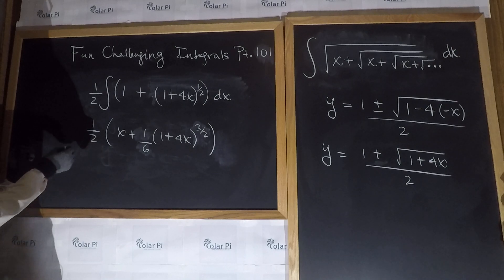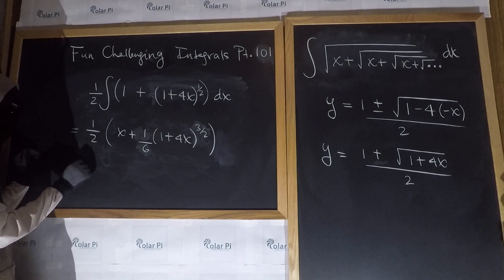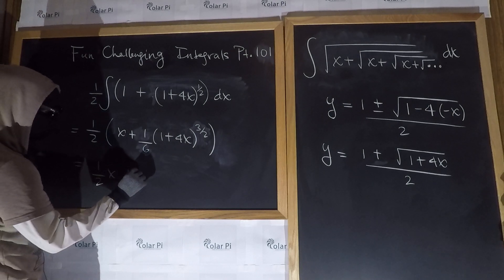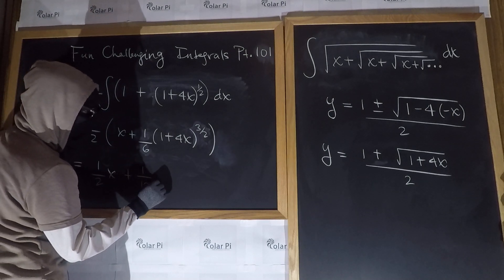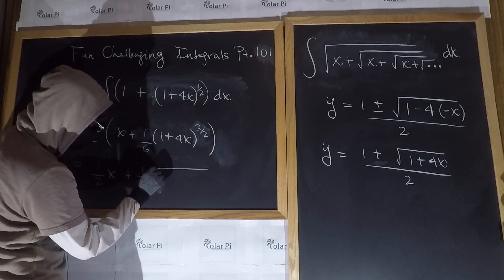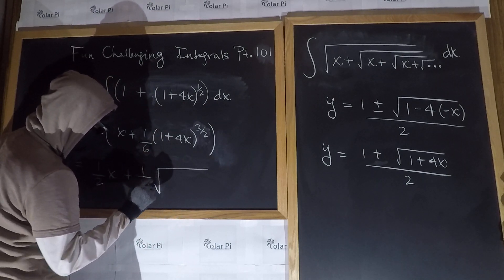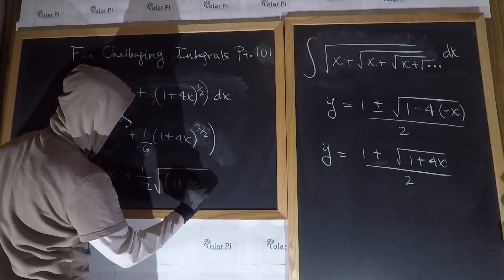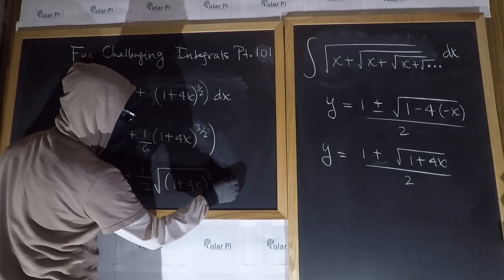So all that is left is to distribute the one-half and write our final answer: one-half x plus one-twelfth times the square root of 1 plus 4x cubed. And of course, plus C.